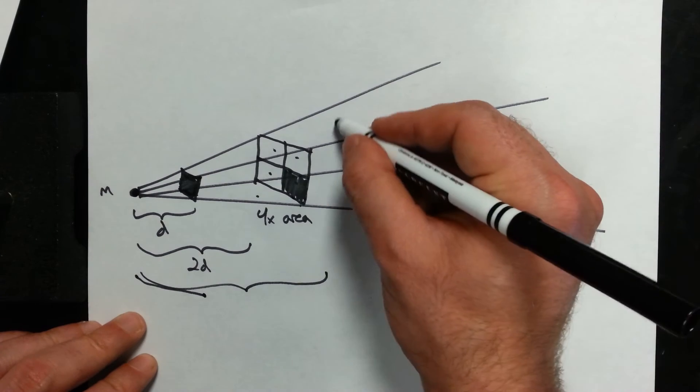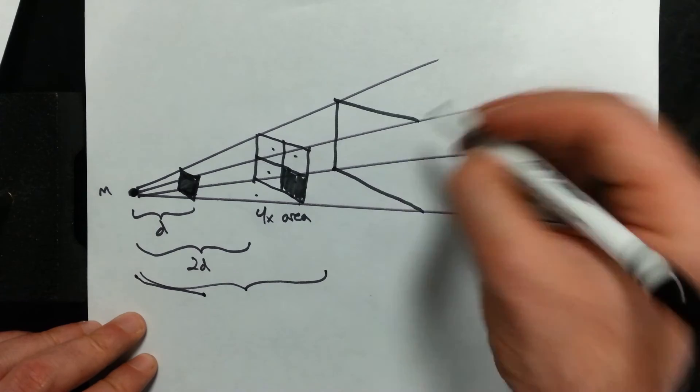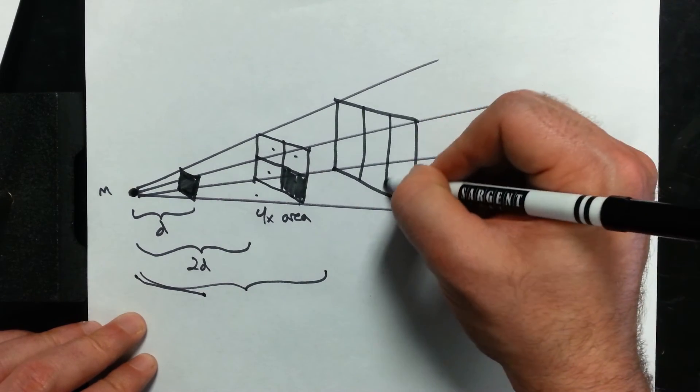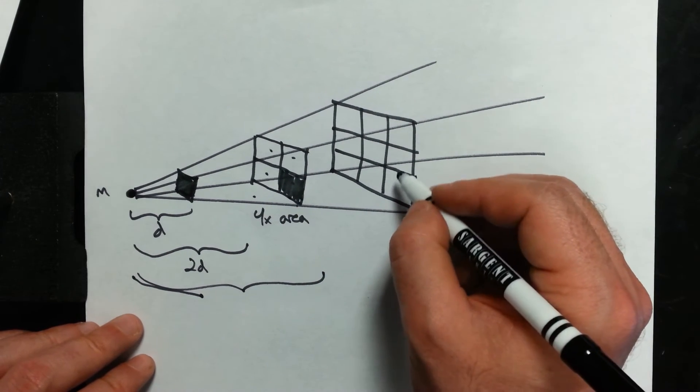Let's go three times the distance, which is about approximately here. Set this up again. Now you guessed it. I'm three times as far away. I'm spreading out three times as wide. I'm spreading out three times as tall.